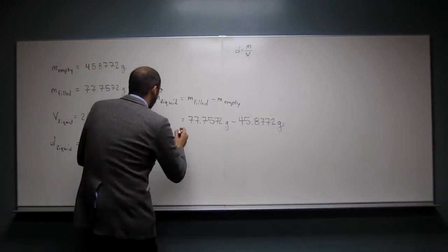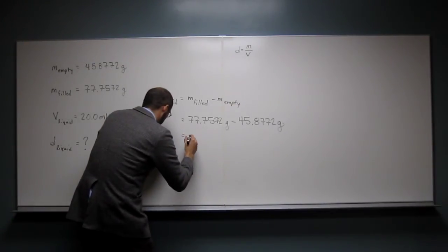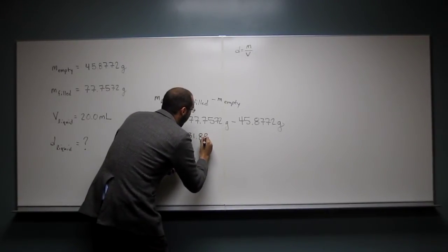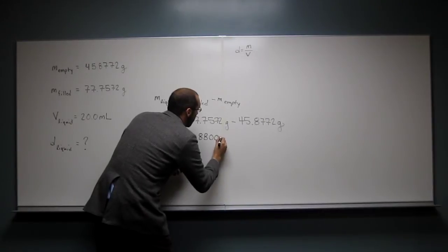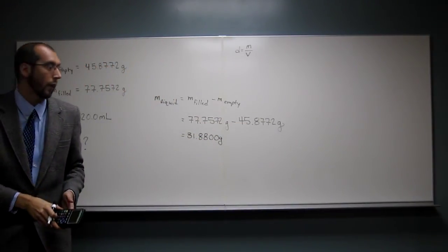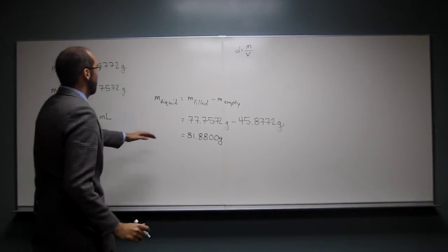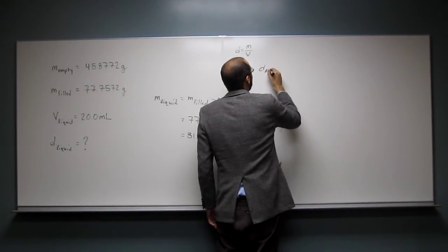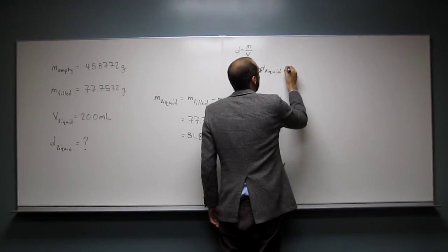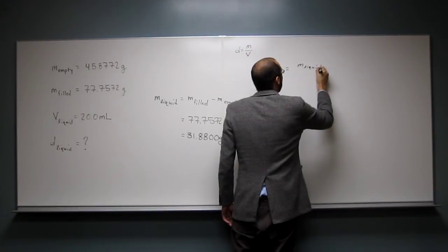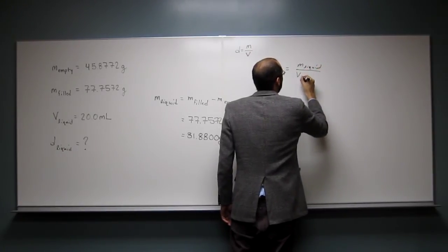And I get 31.8800 grams, because we have to do 4 after the decimal, okay? So that's going to be the mass of the liquid, right? So the density of the liquid is going to be the mass of the liquid divided by the volume of the liquid.